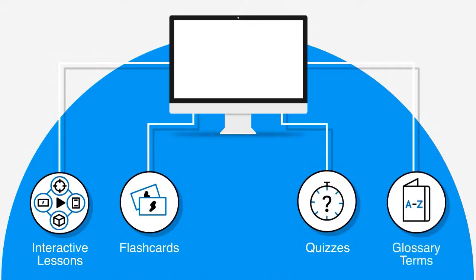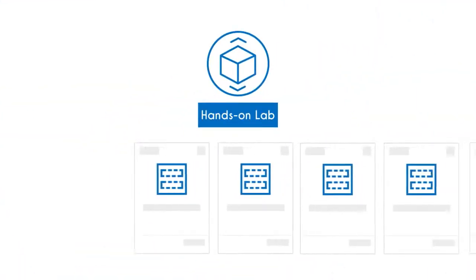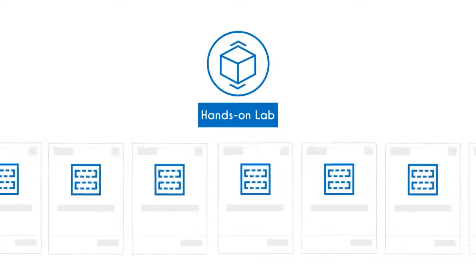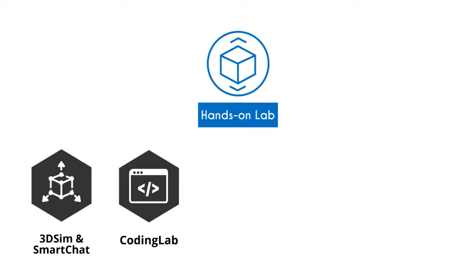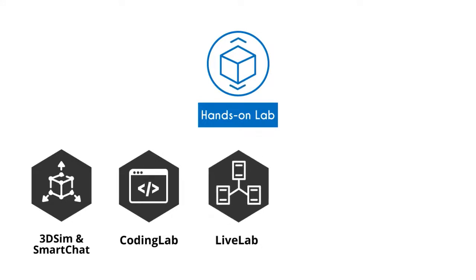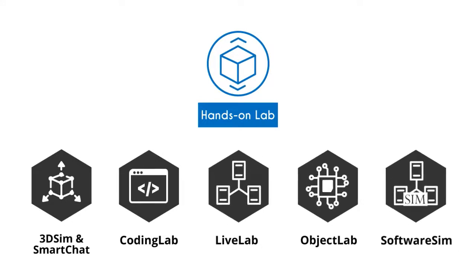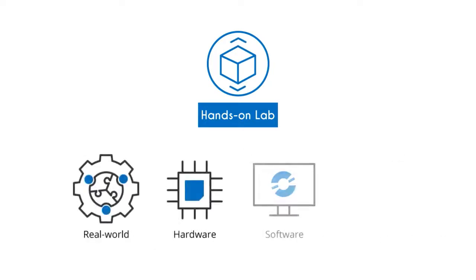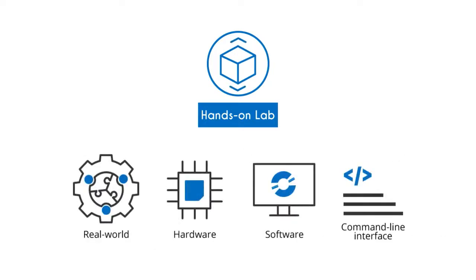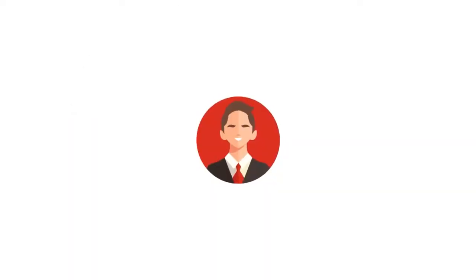UCertify comes complete with hands-on labs to give students a real exam experience in an online environment. The lab consists of 3D SIM and Smart Chat, Coding Lab, Live Lab, Object Lab, and Software SIM that simulate real-world hardware, software, and command-line interface environments that allow students to perform activities in real or simulated environments.